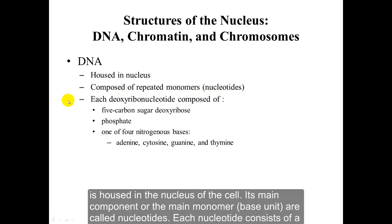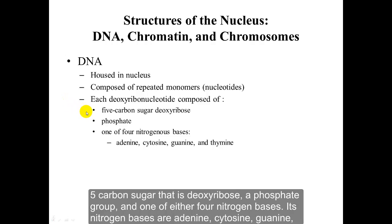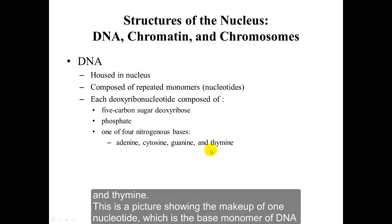Each nucleotide consists of a 5-carbon sugar — that is deoxyribose — a phosphate group, and one of four nitrogen bases. Those nitrogen bases are adenine, cytosine, guanine, and thymine.